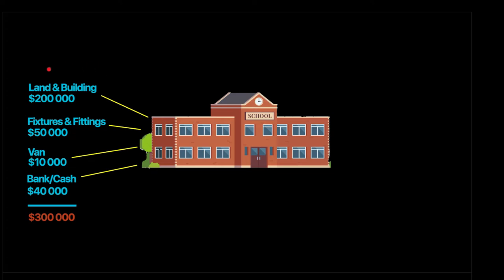First, I need to buy land and building — let's say $200,000 to establish my school. I would also need to buy fixtures and fittings: chairs, tables, splits, and other furniture items to put into the school so it can be in a condition to start. I also need to buy some vans, as I want to start a shuttle service for students.